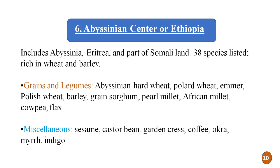The sixth is the Abyssinian center or Ethiopian center, which includes Abyssinia, Eritrea, and part of Somaliland. Around 38 species are listed. This center is particularly rich in wheat and barley, with wheat and barley having their origin in Abyssinia and Ethiopia.